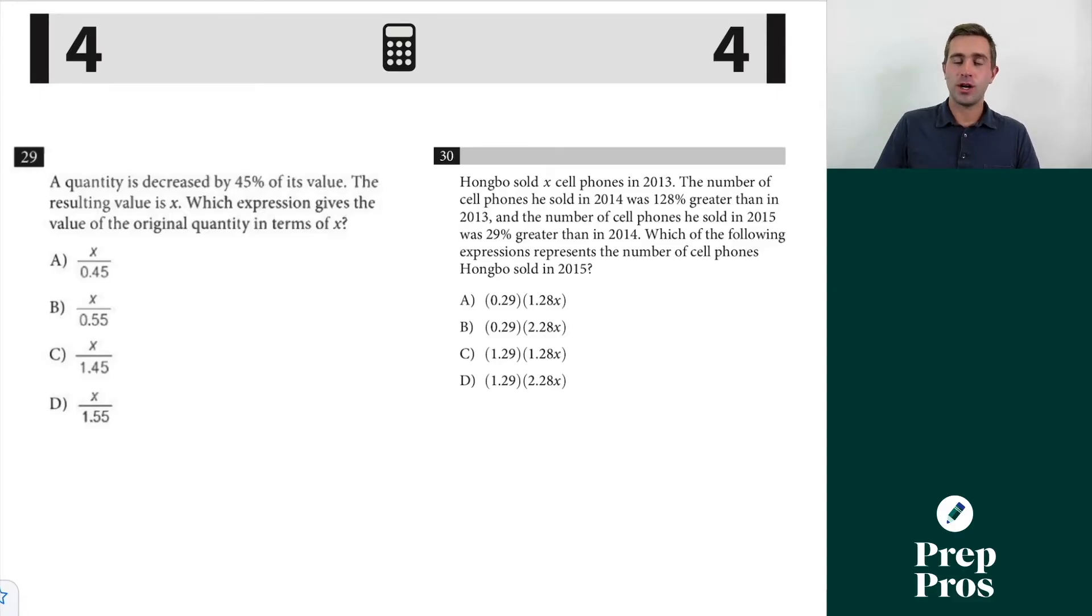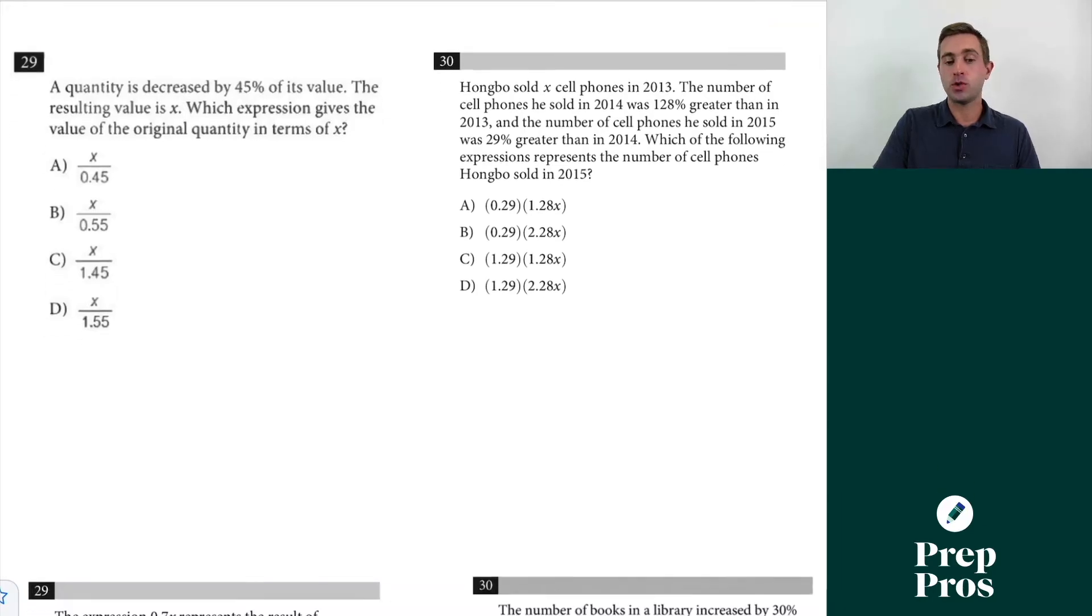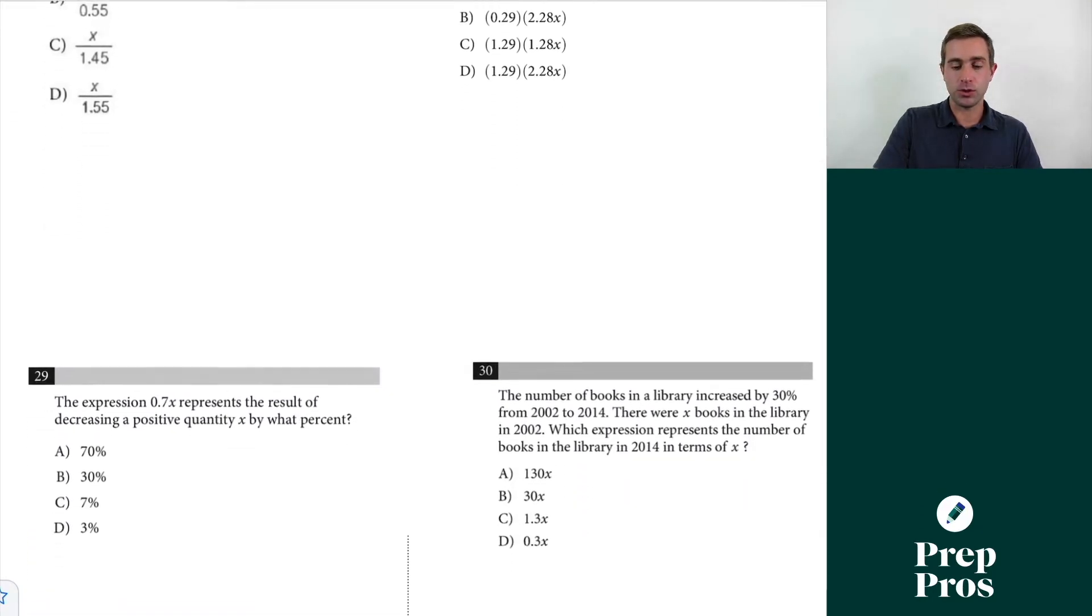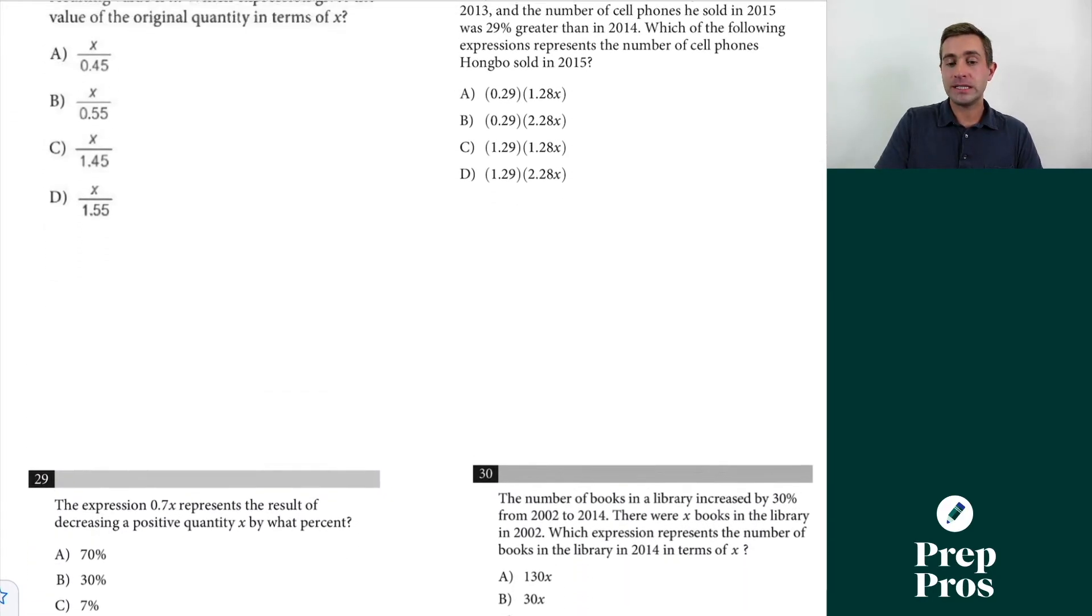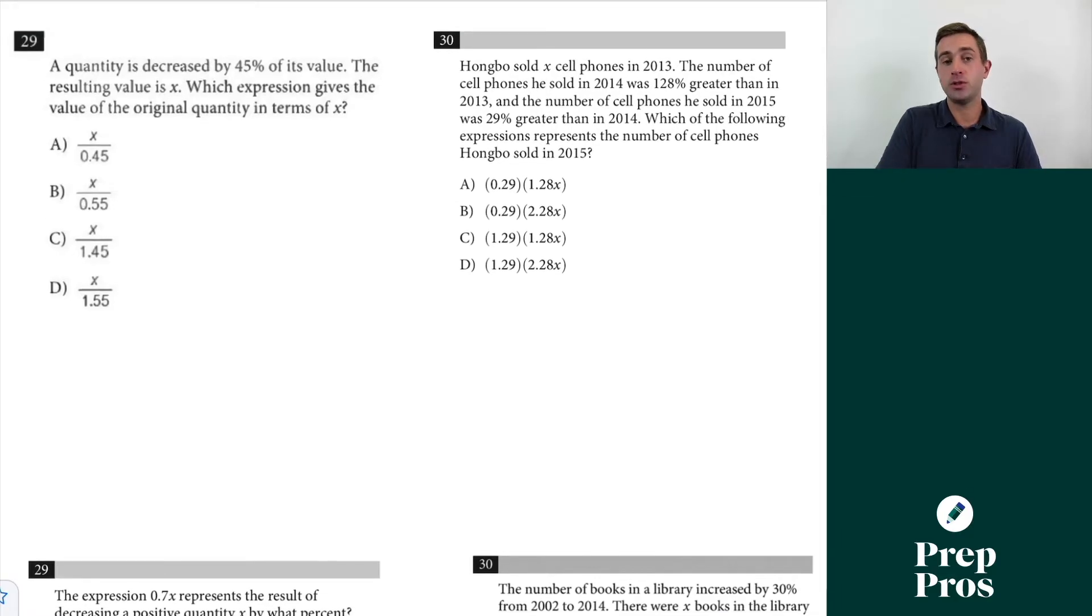In this video, we're going to talk about one question type you need to know how to solve if you're taking the SAT. It almost always shows up as one of the hardest questions on the calculator section, which are going to be 29 and 30 for your multiple choice ones. As I've grabbed some examples from the last two years of the test, it's a really similar question time and time again.